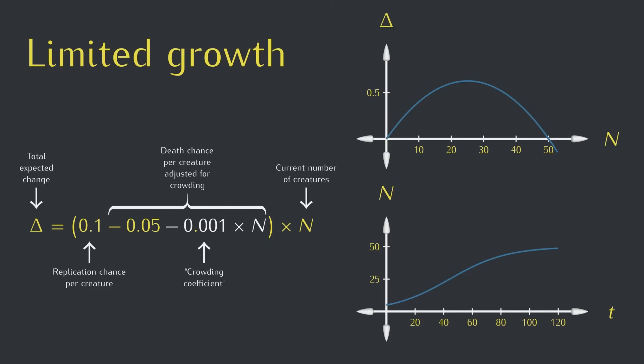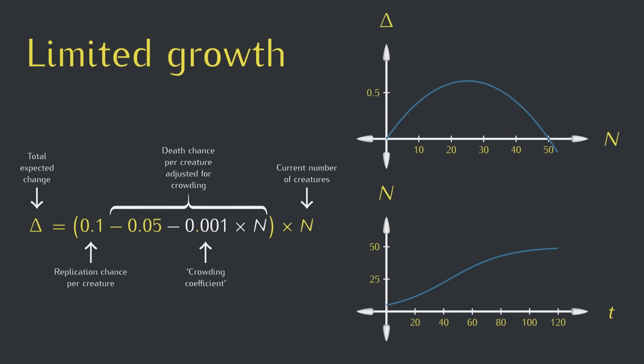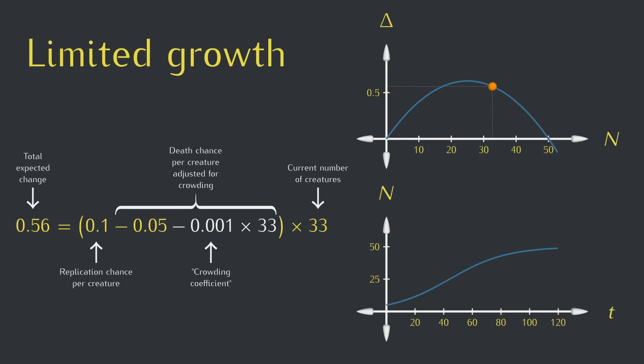And because I looked ahead when picking these numbers, a crowding coefficient of 0.001 does cause delta to be 0 when n is 50. This is because the death chance when adjusted for crowding becomes equal to the replication chance per creature, so each creature is just as likely to die as it is to reproduce. The replication and death chances balance each other up, and we found equilibrium again.